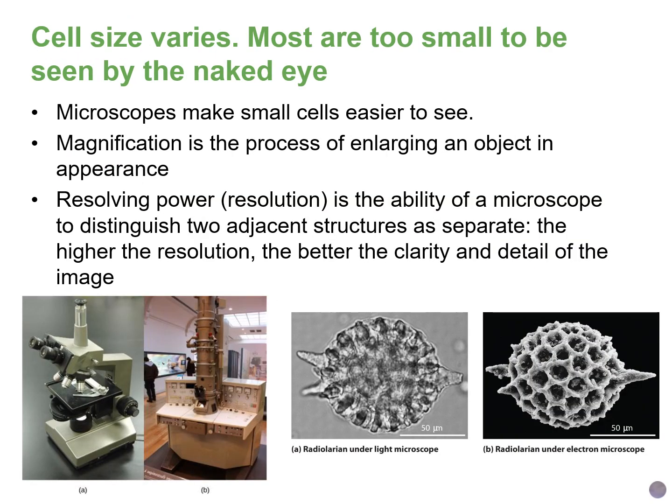Most cells are too small for us to see with the naked eye, so we have microscopes to make them easier to see. Microscopes magnify the appearance of our specimen, and the magnification really depends on which types of lenses you have available.